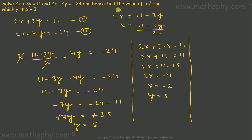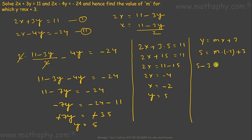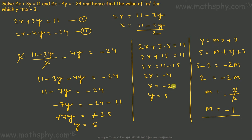Now it says find the value of m for which y equals mx plus 3. We know y equals 5 and x equals negative 2. Substituting: 5 equals m times negative 2 plus 3, so 5 minus 3 equals negative 2m, giving 2 equals negative 2m. Therefore m equals negative 1. So the equation y equals mx plus 3 holds with m equal to negative 1.